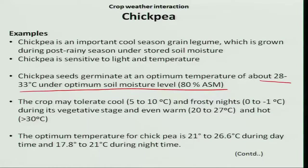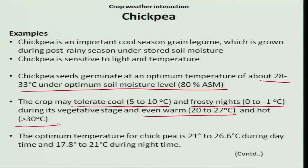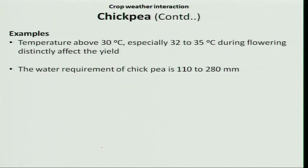This crop may tolerate cool temperatures as well as frosty nights ranging from 0 to minus 1 degree Celsius. It can also tolerate warm and hot temperature situations. However, it is highly sensitive to drought conditions. The optimum temperature during the vegetative stage is 21 to 26.6 degree Celsius during daytime and 17.8 to 21 degree Celsius during nighttime to produce maximum biomass. At the reproductive stage, temperature above 30 degree Celsius — especially 32 to 35 degree Celsius during flowering — distinctly affects flowering.